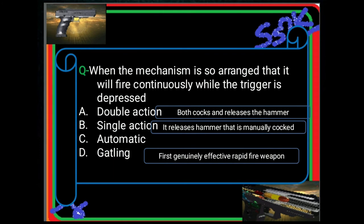Semi-automatic: you cock it once, and each time you press the trigger, one bullet comes out. You only cock it once — that is what is called semi-automatic. For automatic, when you depress the trigger continuously, it will continuously fire at very high speed.